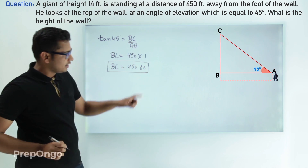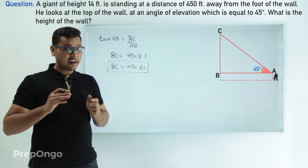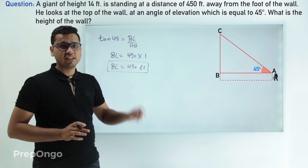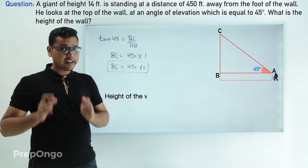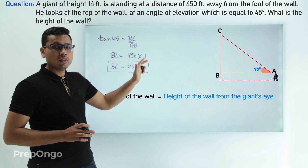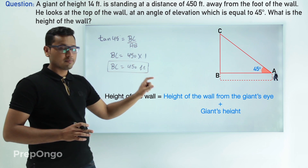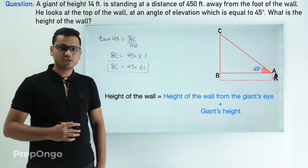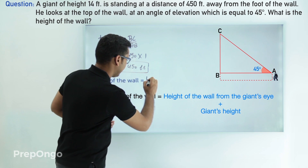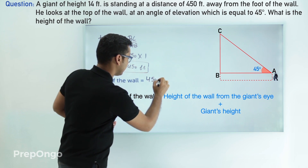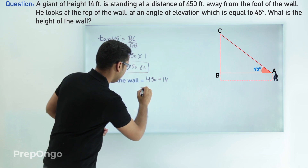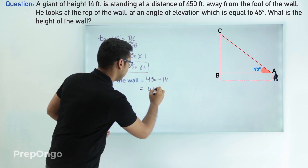So BC equals 450 feet. Now to find the height of the wall we have to also add the height of the giant. So the height of the wall equals the height from the giant's eyes to the top of the wall plus the height of the giant. That gives us 450 plus 14, which equals 464 feet.